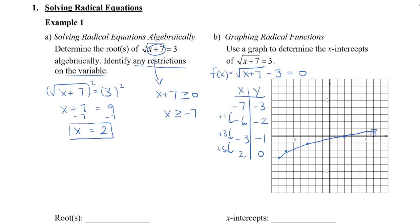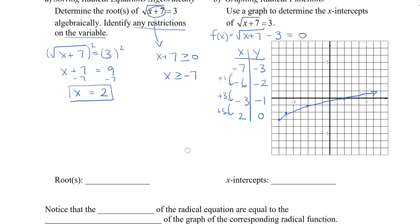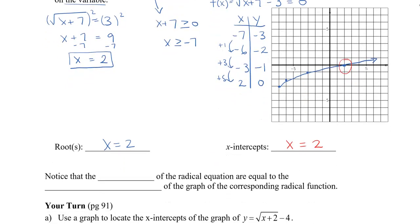Looking at my graph, I can see that my x-intercept is at x equals positive 2, which coincides with my root x equals 2. So we can notice that the roots of the radical equation are equal to the x-intercepts of the graph of the corresponding radical function.